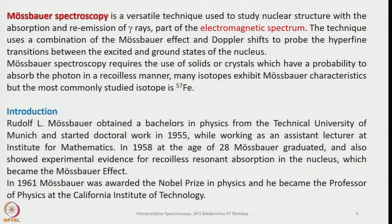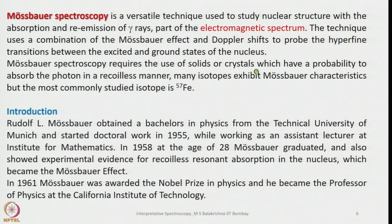Mössbauer spectroscopy requires the use of solids or crystals which have a probability of absorbing the photon in a recoilless manner. Many isotopes exhibit Mössbauer characteristics, but the most commonly studied isotope is iron-57.